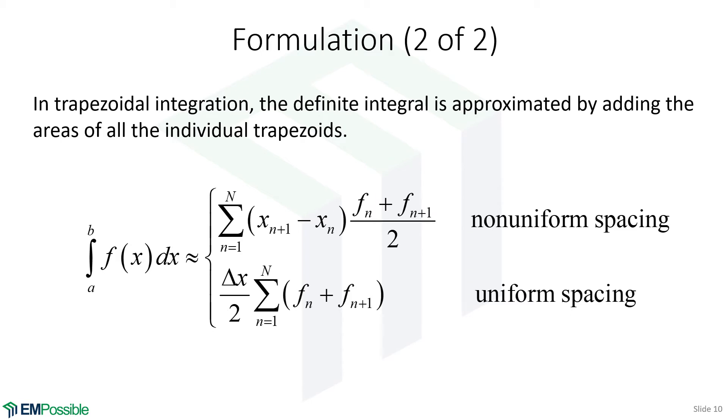Now for uniform spacing, this difference in x's just becomes delta x. So we'll bring the delta x and the 2 to the outside of the summation, and we're just summing a bunch of function values in here. So that's for uniform spacing, and this is what we'll focus on mostly in this class.